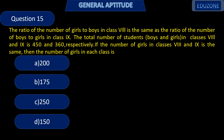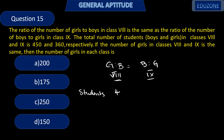Next question. The ratio of number of girls to boys in class 8 is the same as the ratio of number of boys to girls in class 9. The total number of students in class 8 and class 9 is 450 and 360 respectively. If the number of girls in class 8 and class 9 is the same, let it be G. Then boys in class 8 is 450 minus G, and boys in class 9 is 360 minus G.